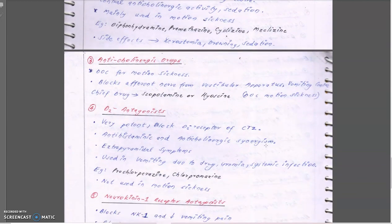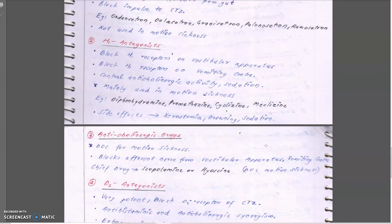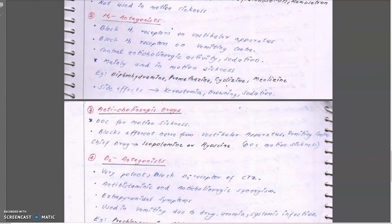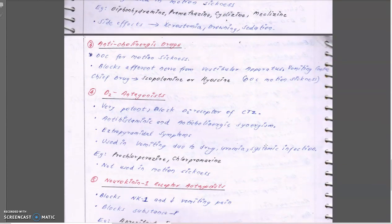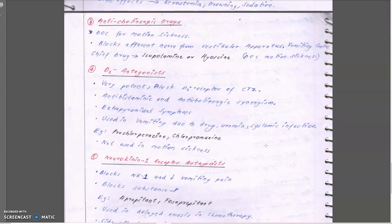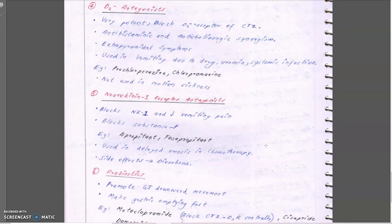The actual anticholinergic drugs are scopolamine and hyoscine. They are used to control motion sickness and can be the drug of choice for motion sickness. They block the afferent nerve from the vestibular apparatus and vestibular centers. They are rarely or never used in veterinary medicine.